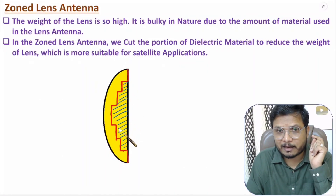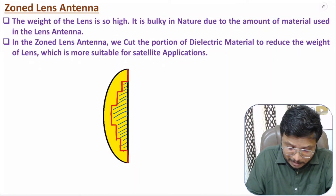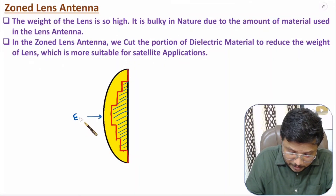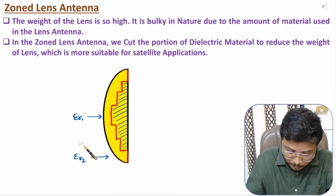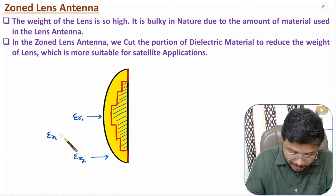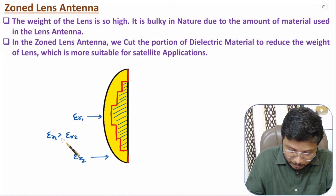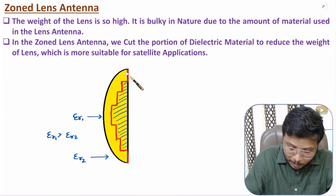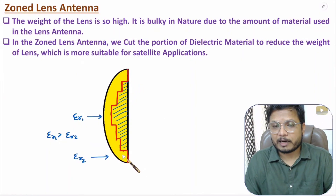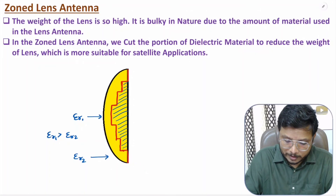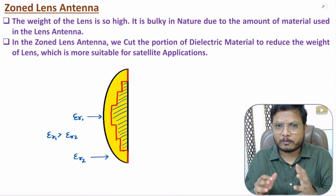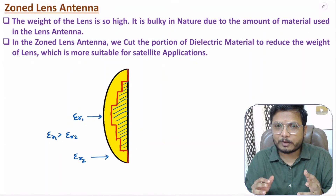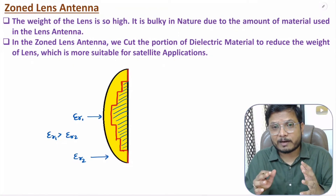Another way to reduce weight is to use a higher dielectric constant ε_r1 at the middle and a lower dielectric constant ε_r2 on the outer regions, where ε_r1 > ε_r2. This also reduces the overall weight of the lens antenna. In the zoned concept, we cut the material to lower the weight of the lens.